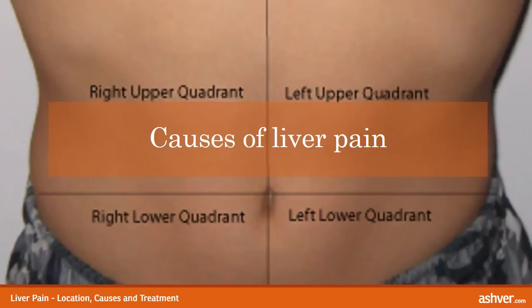Causes of liver pain: Causes of liver pain are varied and may stem from a variety of factors. Alcohol abuse is one of the major factors. When alcohol is consumed, it first gets absorbed into the bloodstream from the stomach and intestines. The liver plays a pivotal role in filtering the blood before it reaches other organs. Due to this, a major portion of the alcohol gets deposited in the liver, contributing to the development of various liver diseases. In the long term, this causes liver inflammation and finally liver cirrhosis.